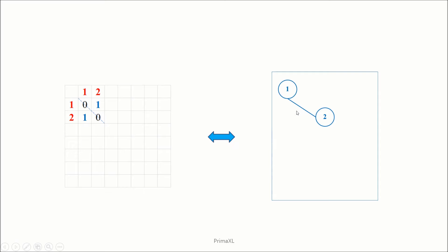It would be the simplest network we can think of. A 2x2 matrix can represent this network. The matrix element at the first row and the second column is 1, and the element at the second row and the first column is also 1. Imagine we flip this matrix around the diagonal — it will look exactly the same. So, this matrix is symmetric.